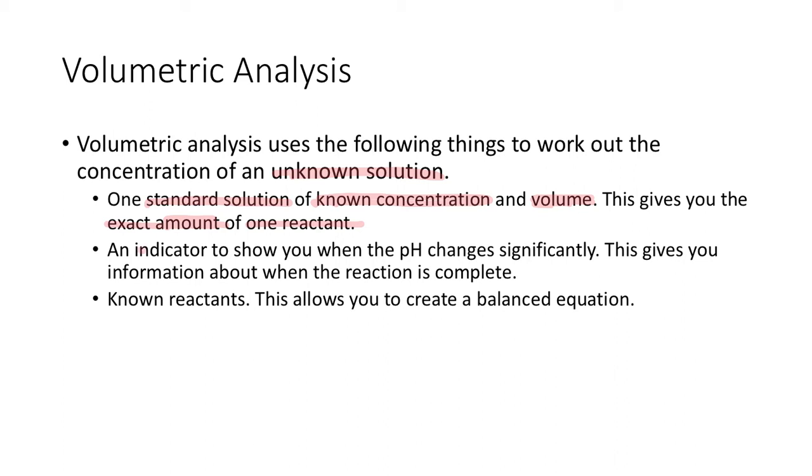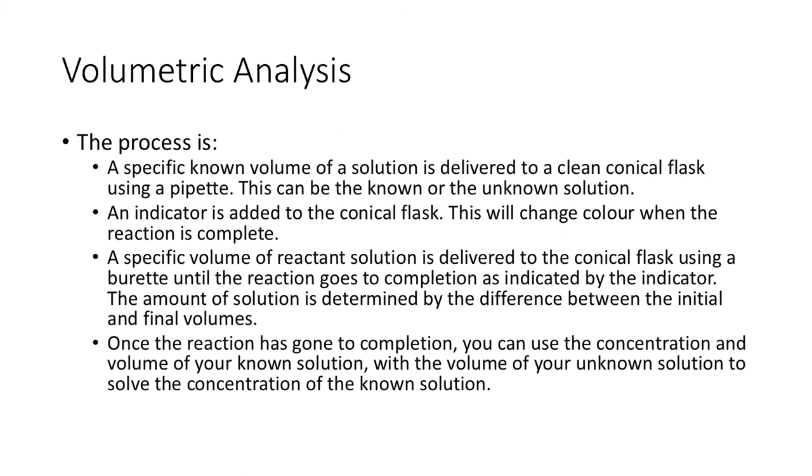An indicator to show you when the pH changes significantly, which gives you an indication about when the reaction is complete. And then you must have known reactants, which you use to create a balanced equation. So you must know how those two reactants react with each other. That's kind of what you need for a volumetric analysis. One known, some way to know that the reaction is finished, and you need to know how they react with each other in what ratio.